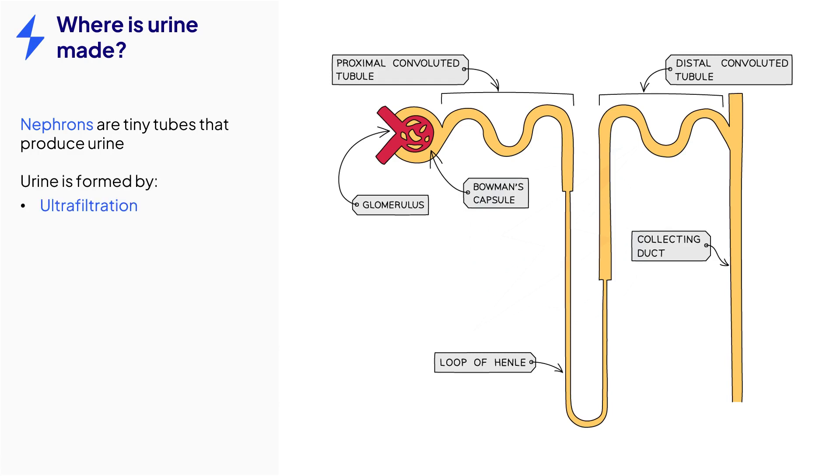This involves the processes of ultrafiltration and selective reabsorption of useful substances, which occurs in different parts of the nephron. Knowing the parts of the nephron will make it easier to understand how urine is formed, so take some time to study this diagram.